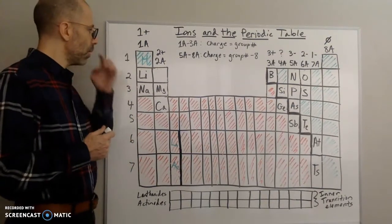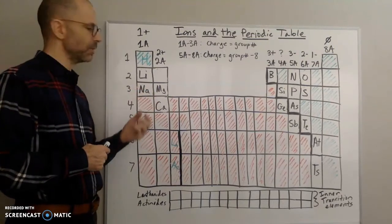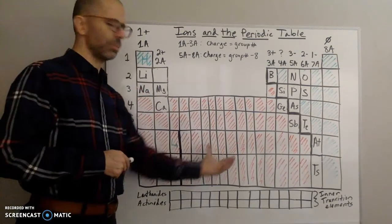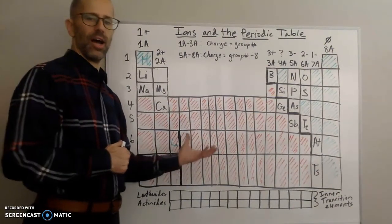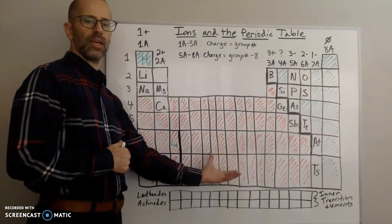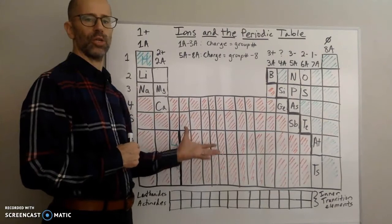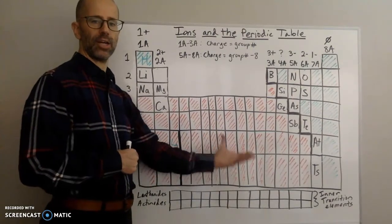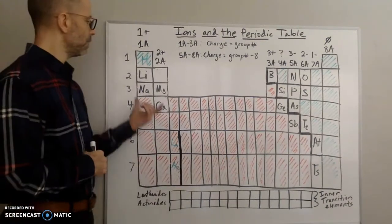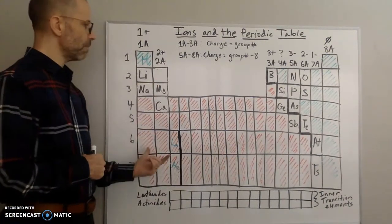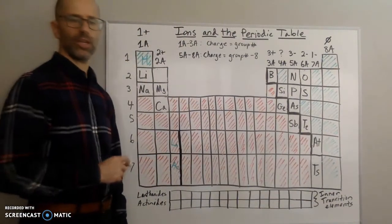We are going to be focusing on the main group elements. For the transition elements, the pattern is hard to see — the elements tend to have more than one charge, so we're going to ignore them. But for the main group elements, there is definitely a pattern that you want to see.